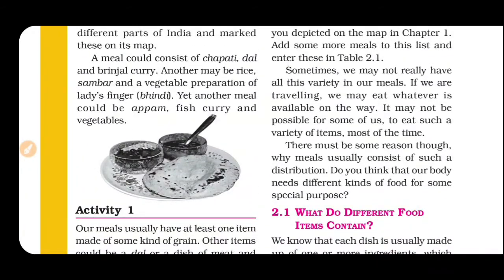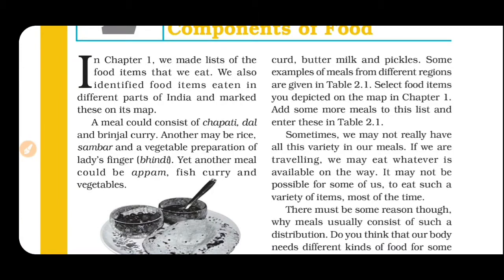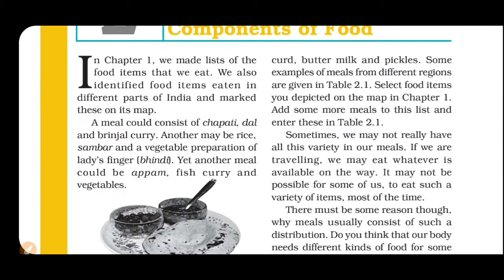Yahan pe ek activity hai - Activity One. Us ke andar likha hai ki our meals usually have at least one item which is made up of some kind of grain. Doosri item kya ho sakti hai - jaise ki dal hai, ya meat hai, ya vegetables hain. Kuch log khane ke saath curd khate hain, buttermilk khate hain. So it may also include items like curd, buttermilk and pickles.